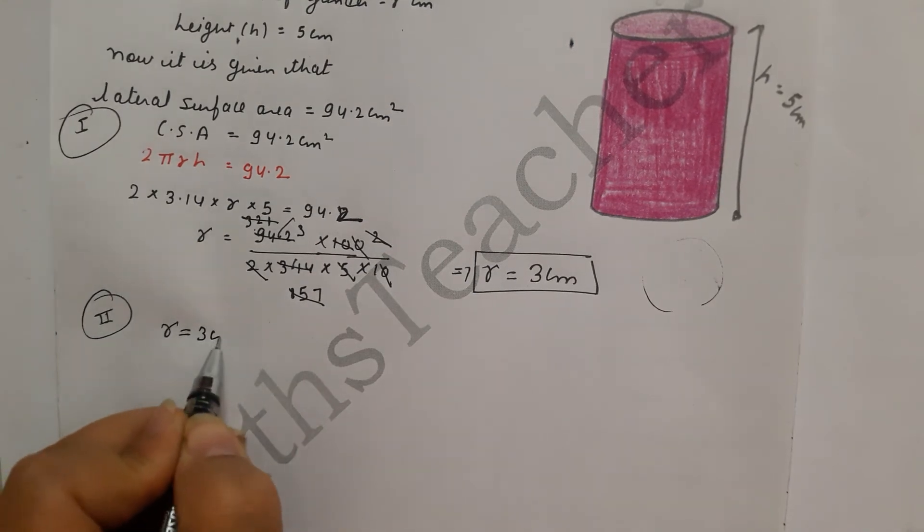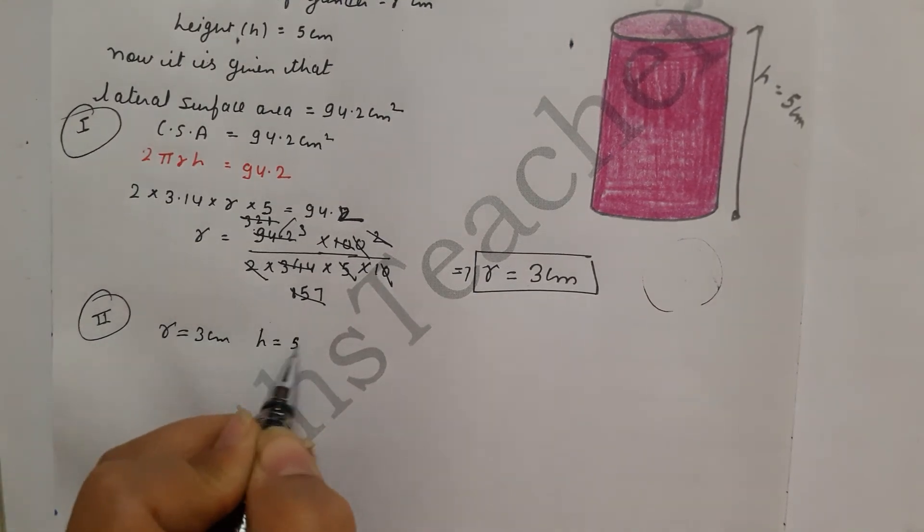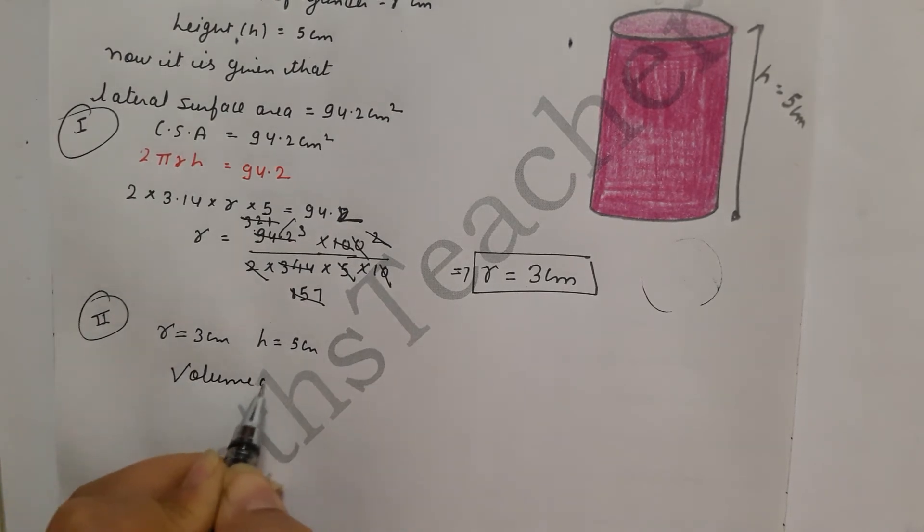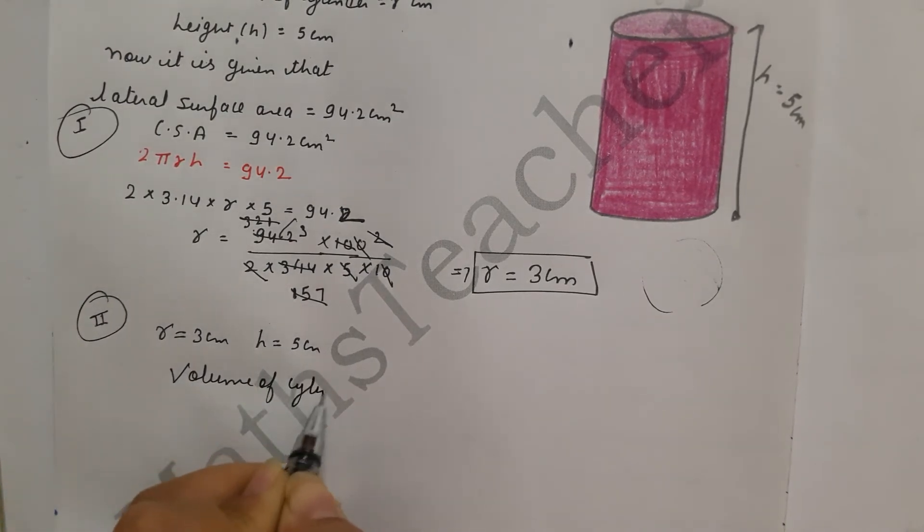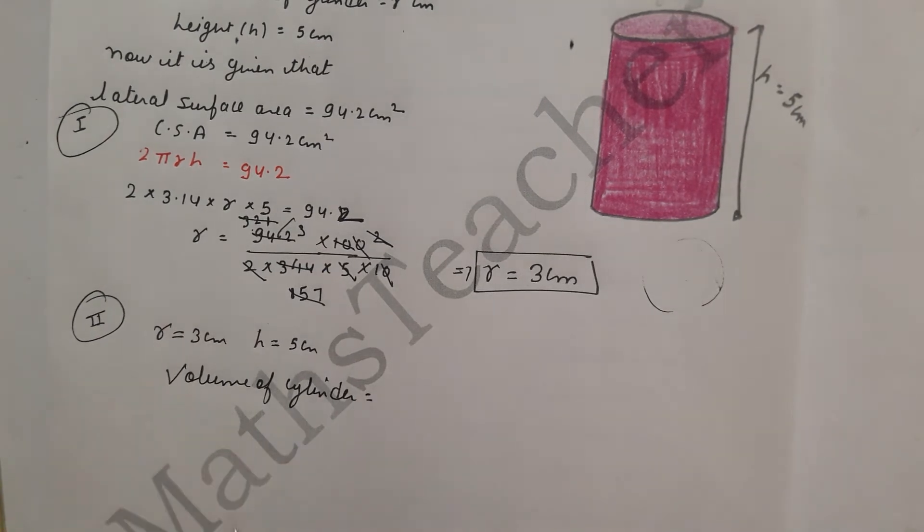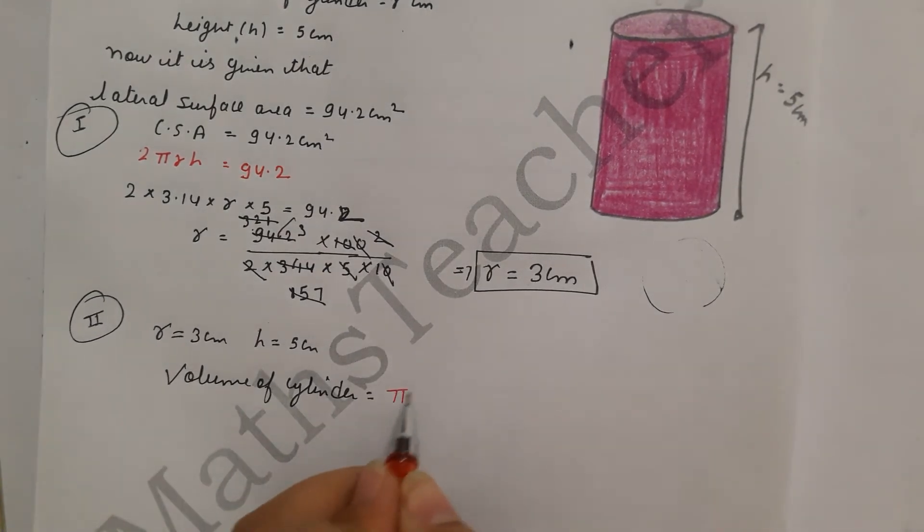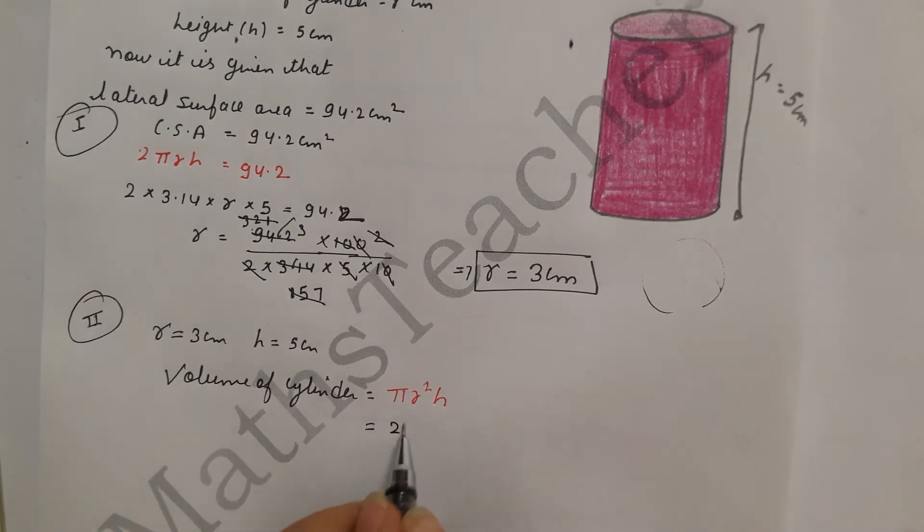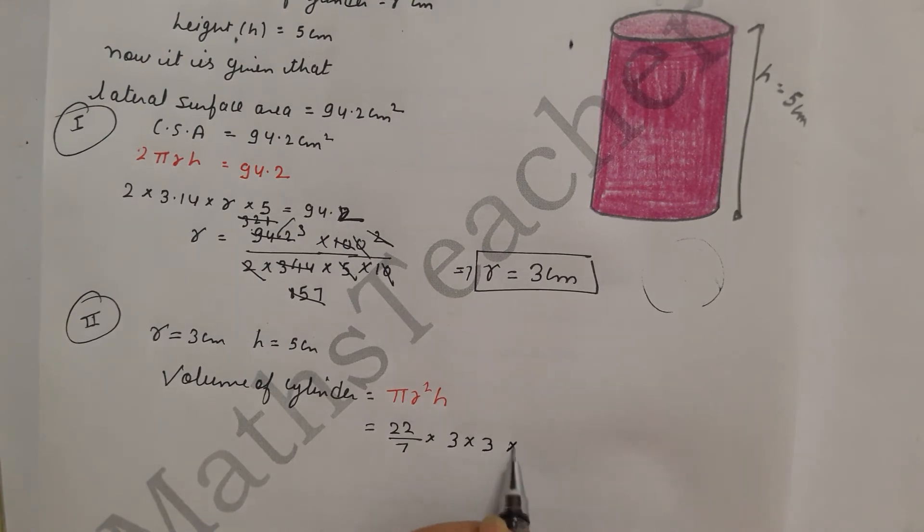Radius 3 cm, height 5 cm, and volume of cylinder. Let's put the formula. Volume of cylinder is base area into height, then base πr² into height h. Now value π is 22 by 7, r square means radius 2 times and height